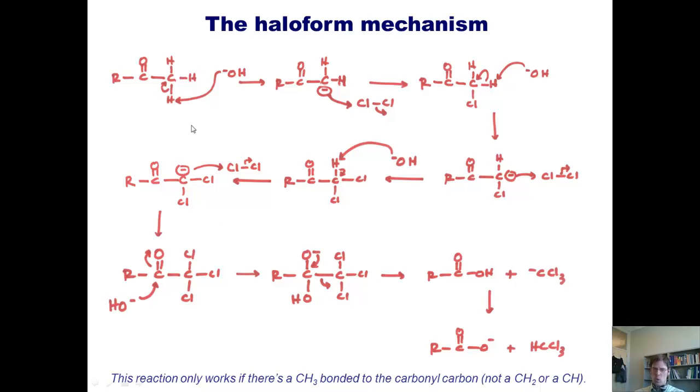If I start with a CH2, then I can only get two chlorines on here, which is not enough electronegative suction to make this carbon a good leaving group. And if I only have a CH, then I can only put one chlorine on it. Thus, the haloform reaction only works if you're starting with a CH3, that is, a methyl ketone.